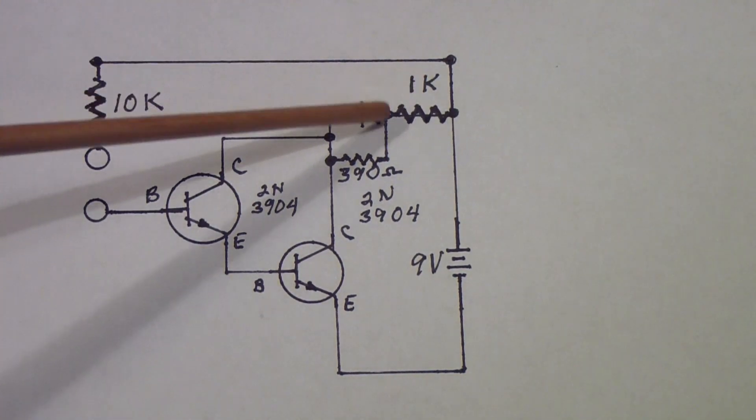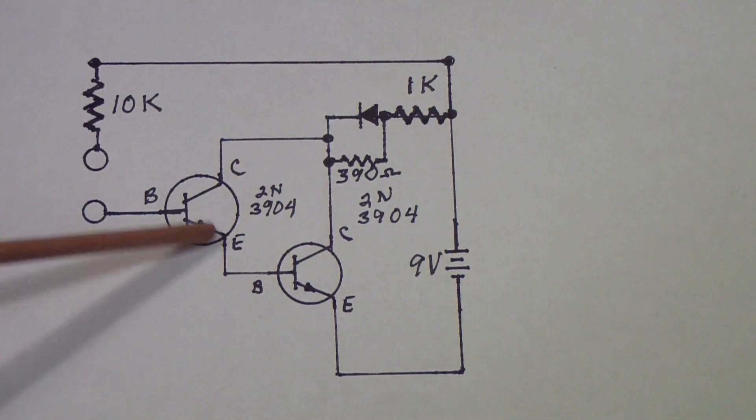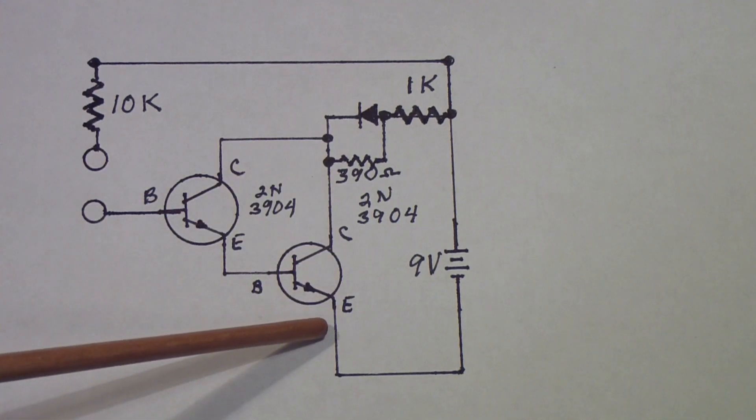And then the 1k resistor is to limit the LED current in case this transistor gets turned on very hard.